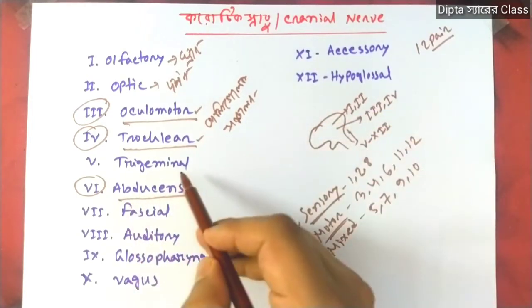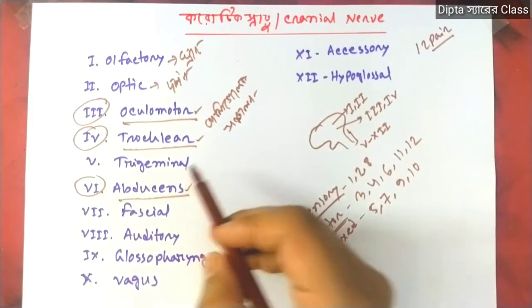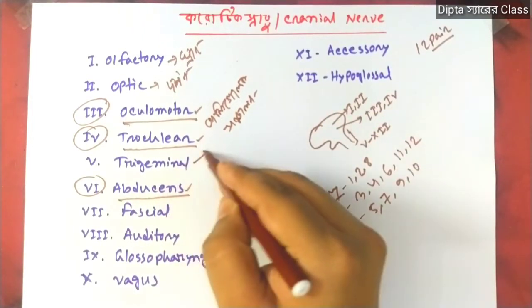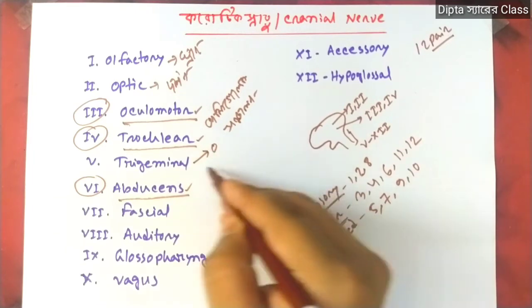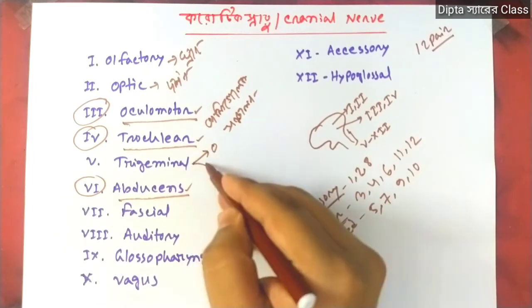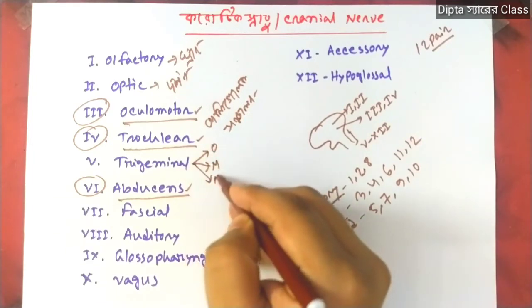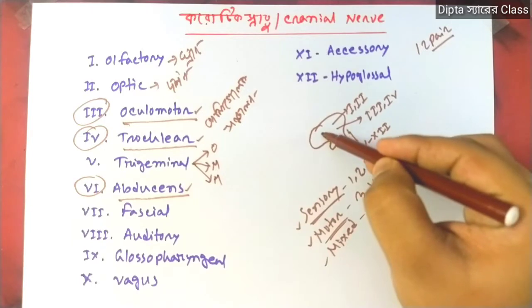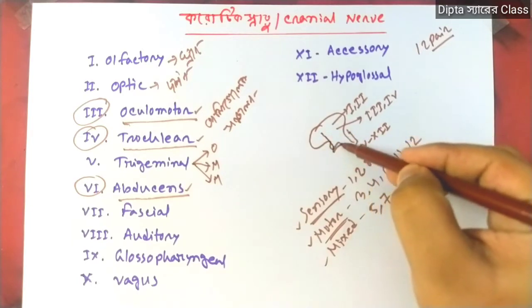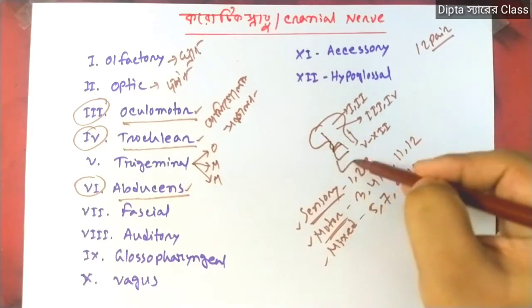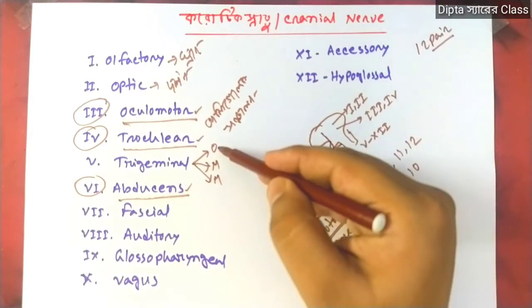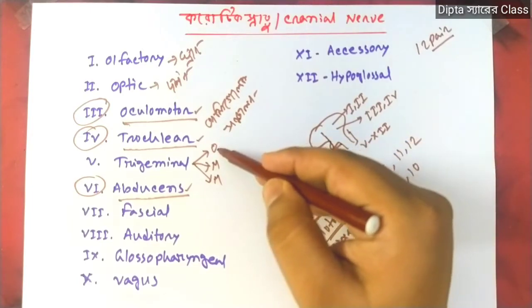That is the Trigeminal nerve. The Trigeminal has three branches: the Ophthalmic branch, the Maxillary branch, and the Mandibular branch. The main branches follow the same pattern — these three branches make up the Trigeminal.